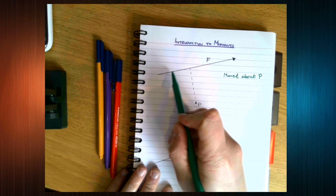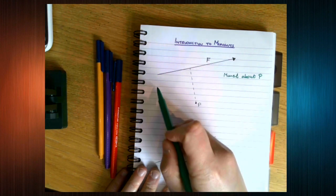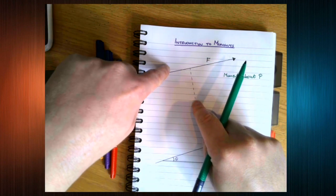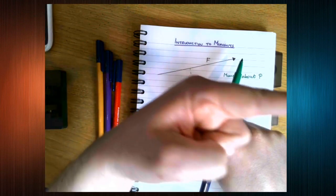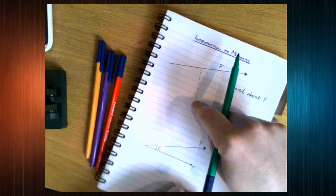So we've got this force here. Let's imagine that this is on a piece of paper. We have a fixed pivot here and we have a force acting in this direction. If we do that, the paper is going to turn.